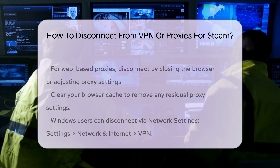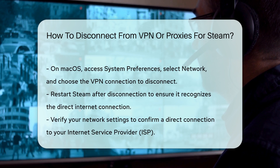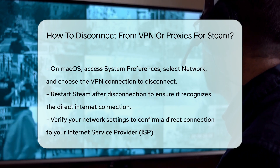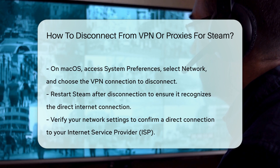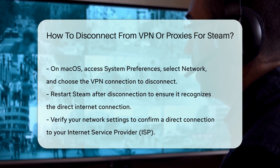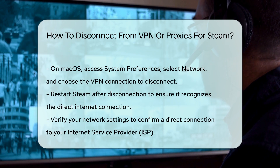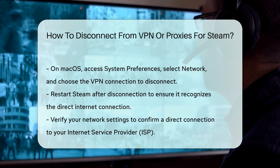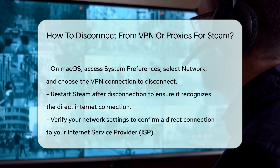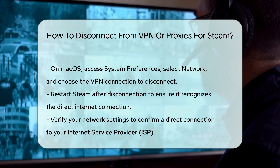Once disconnected, restart Steam to ensure it recognizes your direct internet connection. This step is vital for resolving any connectivity issues caused by the VPN or proxy. By following these steps, you can effectively disconnect from a VPN or proxy, allowing for a smoother Steam experience. Always remember to check your network settings to ensure you are connected directly to your ISP.